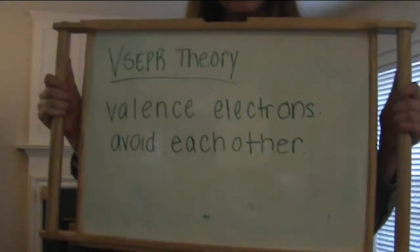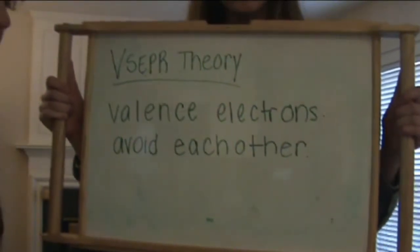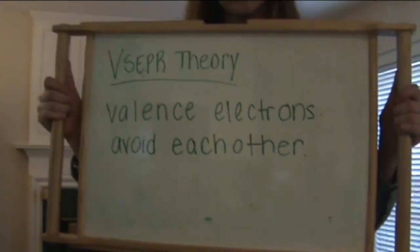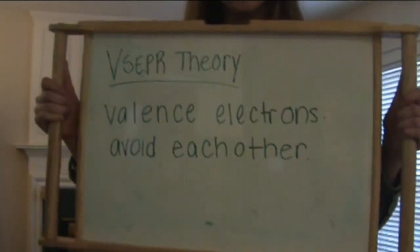The VSEPR theory says that valence-electron pairs try to stay as far away from each other as possible. These are some of the shapes formed because of VSEPR theory.